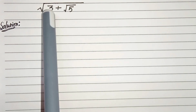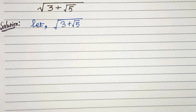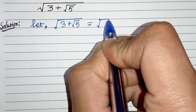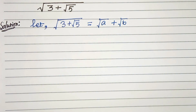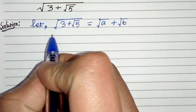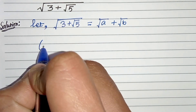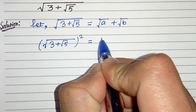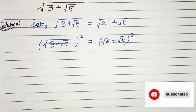Hello everyone. In this video we have to evaluate square root of 3 plus root 5. So let's start. First of all, let's write square root of 3 plus root 5 as root a plus root b. In the next step, let's square both sides. On squaring both sides we will get: root of 3 plus root 5, squared, equals root a plus root b, whole square.